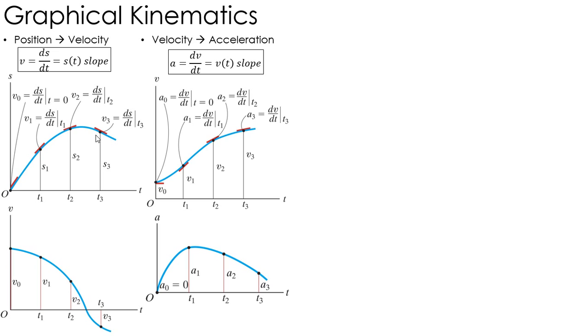Same thing goes for velocity to acceleration. If I take another derivative, I can go from velocity to acceleration. So right here, it's basically flat. So slope is 0, acceleration is 0.